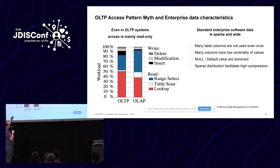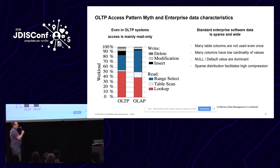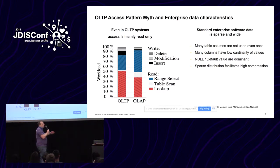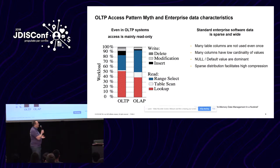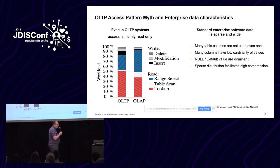Even in a transactional system, mostly you do read access — it's only the top 15% which are writes. So in the end they're not that different. On the other hand, we looked at how the data is structured. You have these huge tables where you have like a sales order header with 150 fields, but if you look at it, you use only 30 of them. Most of them are empty, or if they're filled, they have only a limited set of values. For example, if you put in a country, there are only that many countries in the world. So you have a sparse distribution of data and wide tables with low cardinalities.